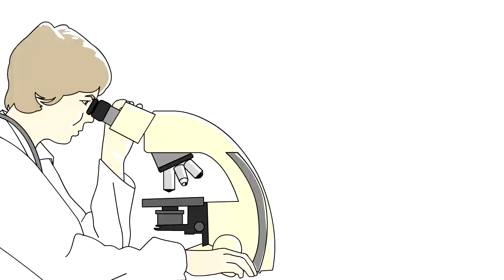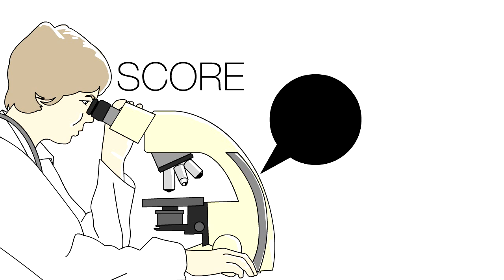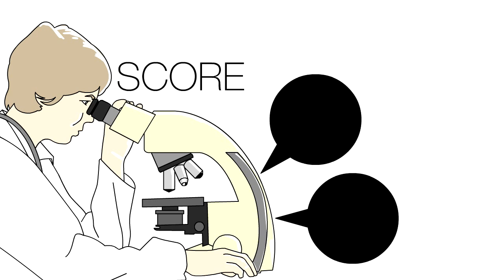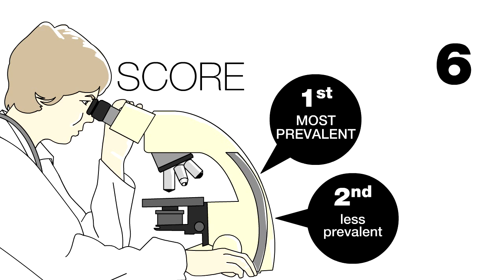So the pathologist examines the core and assigns a score to any cancer he or she sees. Typically there are two scores per core. The first, or primary score, represents the most prevalent form of cancer and the second, the less prevalent form. That's why you'll hear or read things like Gleason 6 (3 plus 3) or Gleason 9 (4 plus 5).